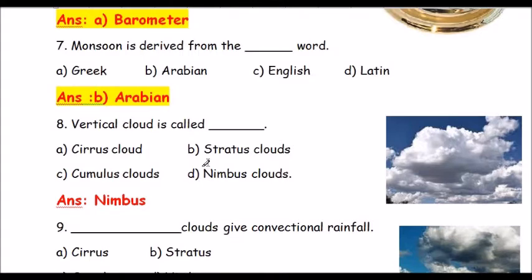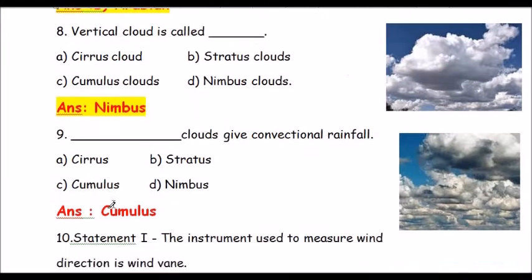Question number 8: A vertical cloud is called what? Options are a) cirrus, b) stratus, c) cumulus, d) nimbus. The correct answer is nimbus. Vertical clouds are called nimbus.